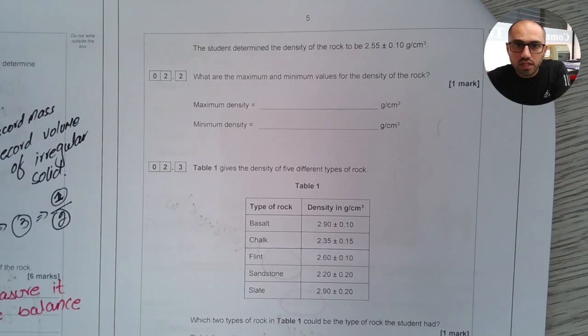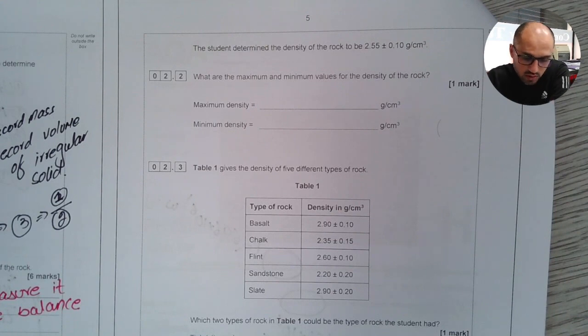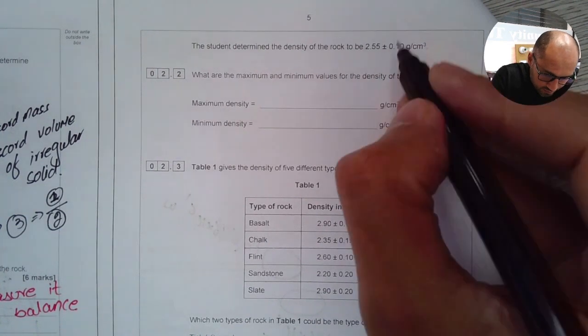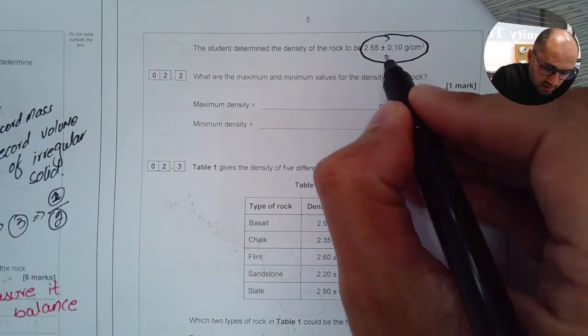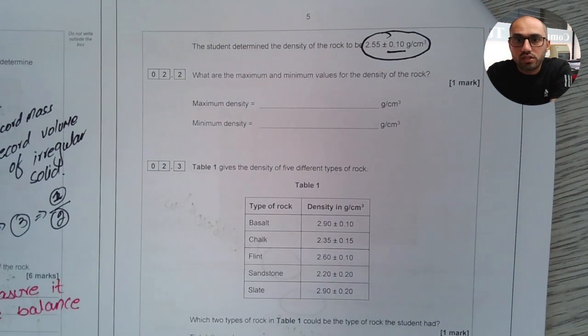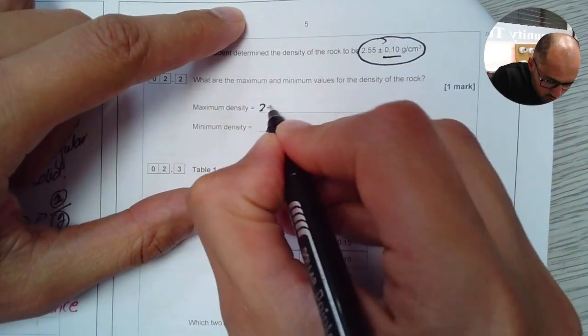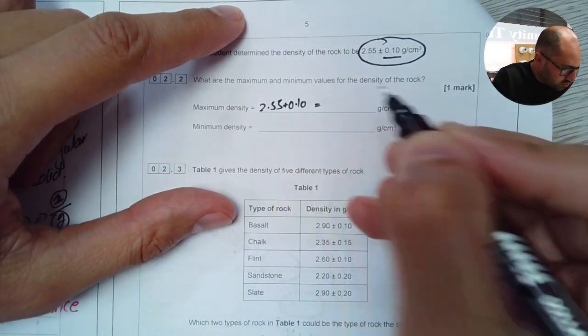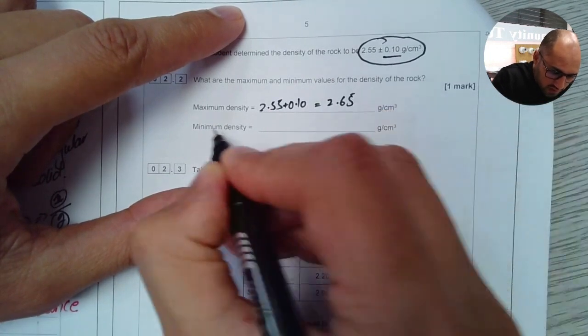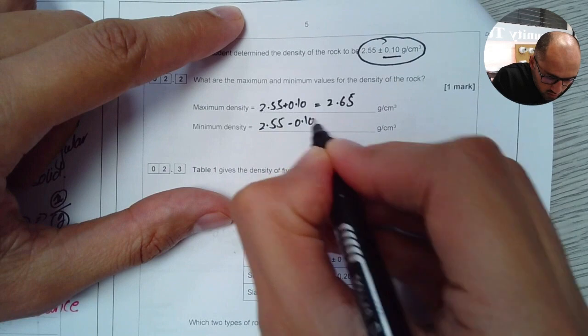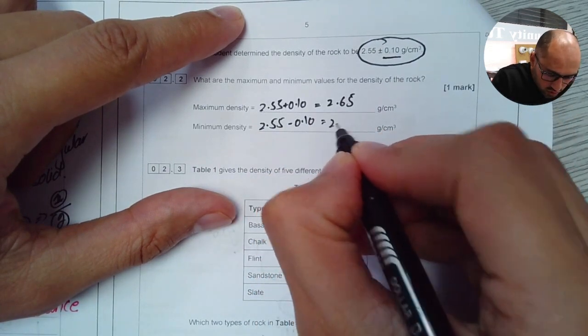Next part says this will determine the density of the rock to be 2.55 plus minus 0.10 grams per centimeter cube. Now this means his value has this much error. It says what are the maximum and minimum values of the density of the rock. So the maximum value will be 2.55 plus 0.10, and that gives you the answer of 2.65. But the minimum density will be 2.55 minus 0.10, and that gives us answer as 2.45.